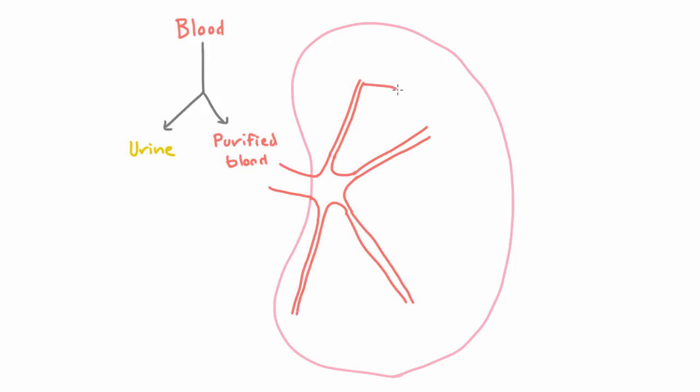Then those vessels themselves split, branching and dividing many, many times, getting smaller and smaller. We'll just draw a couple of them here. Until finally they reach the smallest size arterial vessel, and that is called the afferent arteriole.